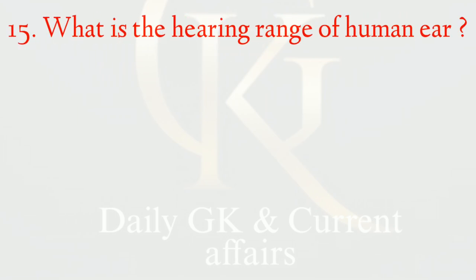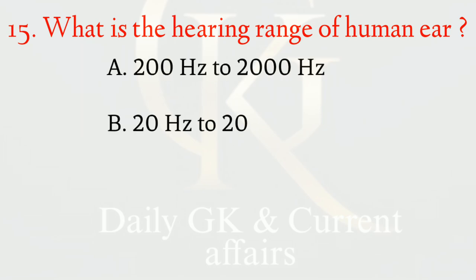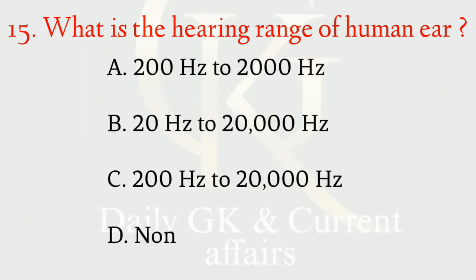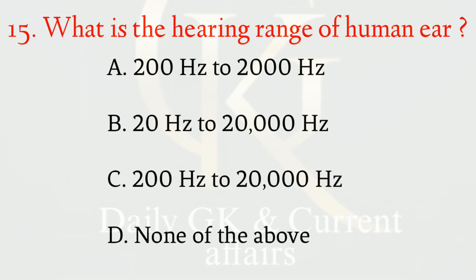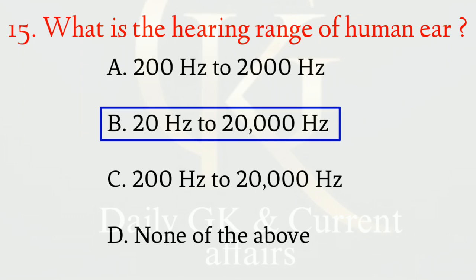What is the hearing range of the human ear? The correct option is b: 20 hertz to 20,000 hertz.